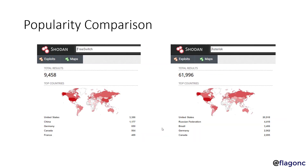Another popularity comparison between FreeSwitch and Asterisk is the number of open servers on the internet. There are almost 10,000 — specifically 9,458 — servers open on the internet using FreeSwitch, compared to 61,000, almost 62,000 open Asterisk servers. The ratio is 1 to 6 — one FreeSwitch server to every six Asterisk servers. Asterisk came first, so it became popular, and there were not many trainings available for FreeSwitch. That's one of the reasons I created this training — we need more training, and we need more people using the software.